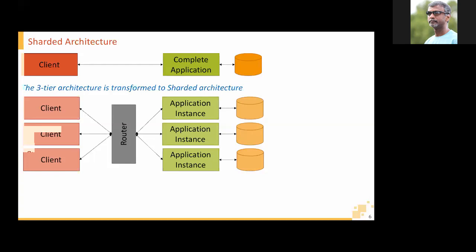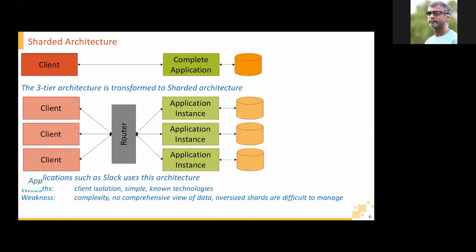This is called sharding architecture — data is sharded across different databases. It scales the three-tier architecture through horizontal partitions, called shards, at both the middle tier and the storage level. Typical SaaS providers in the early days used this, and it also allowed data isolation for premium clients. For example, Slack uses a large PHP architecture with Memcache wrapped around MySQL databases. Each Slack team is self-contained, assigned to a specific instance, with data residing in a single database — so there's no need to scan multiple instances.